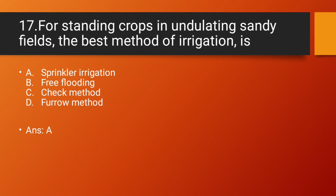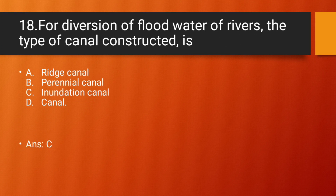Question number 17: For standing crops in an undulating sandy field, the best method of irrigation is — Answer: Sprinkler irrigation. Explanation: For standing crops in an undulating sandy field, the best method of irrigation is sprinkler irrigation.